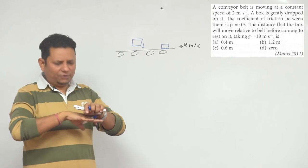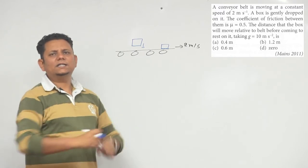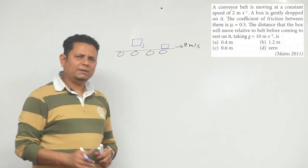The question is, when there's friction between them, the belt is moving forward and the block is moving backward relative to the belt. So how much distance with respect to the belt will it move? Simple question.